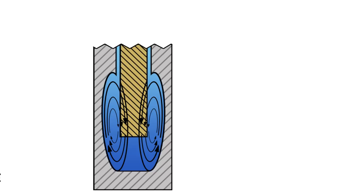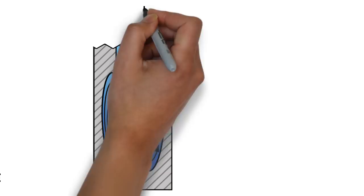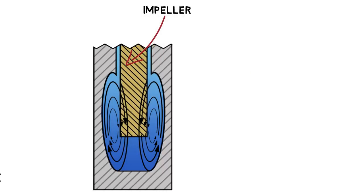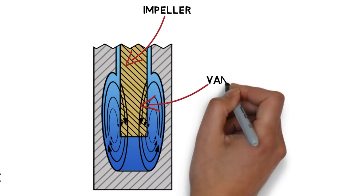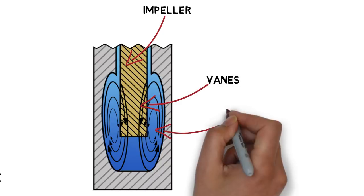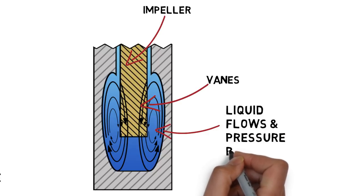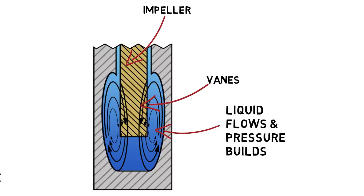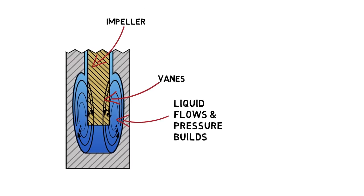In a regenerative turbine pump, liquid recirculates between the impeller's veins. This helical action carries the liquid forward. Energy is added to the liquid in a number of impulses by the impeller's veins as it travels from suction to discharge as the liquid builds pressure.